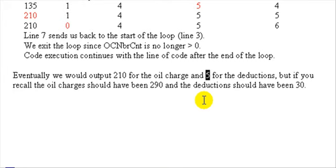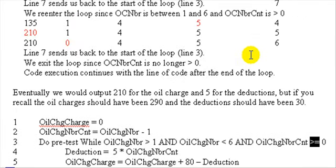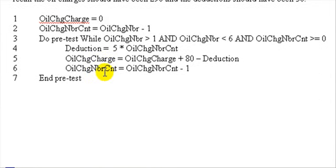To fix this, we just need to make the loop execute one more time. This can easily be done in the conditional test by changing the 'greater than 0' to 'greater than or equal to 0' — just adding the equal sign. That means when oil change number count hits 0, it will go through the loop one more time, subtract 0 from 80, and add that to the total, giving us 290.